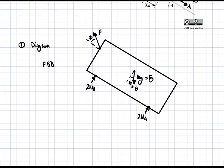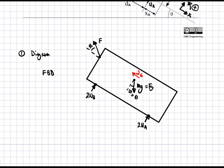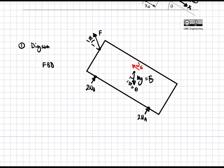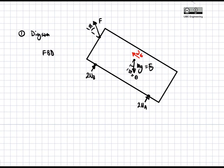We also draw in our acceleration, acting at the center of gravity, AG. We assume the direction is parallel to the slope — in the x direction — because the cart is not detaching from the ground and won't start to rotate. So alpha is zero, and acceleration can only be along the slope. This completes our full free body diagram.